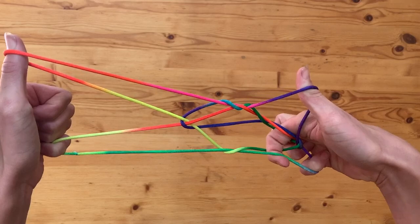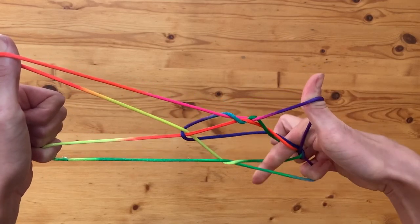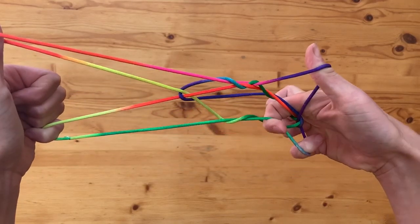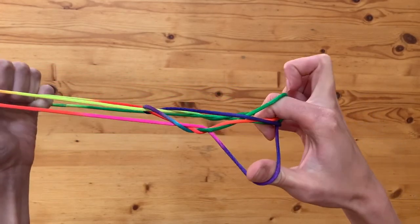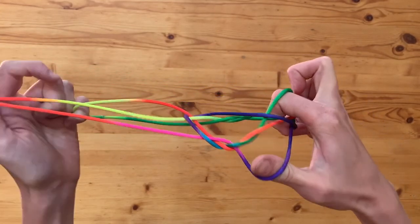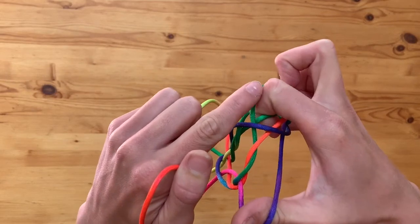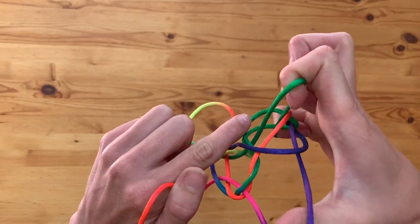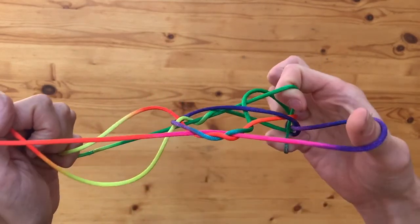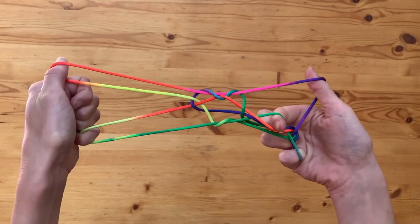So you can see I've got two strings on that side of my index and two strings on this side, and I'm going to hook on to this very bottom string that goes to my pinky there. So I'm going to hook on and I actually want to pull that through those four strings. So it's a little bit tricky and you can sometimes use your other hand to help do that, in order to pull it through those four strings.